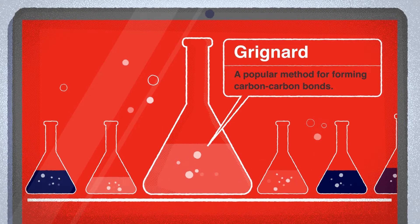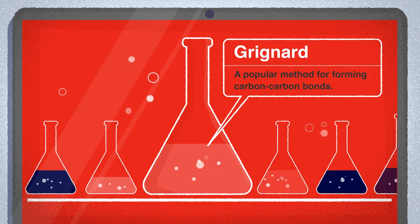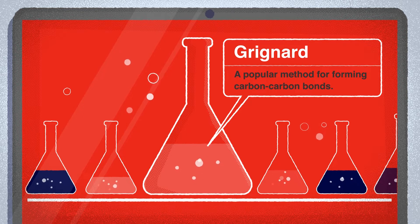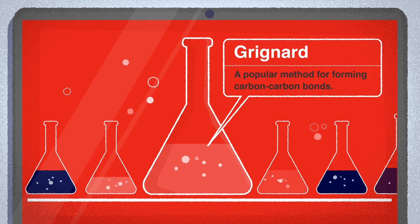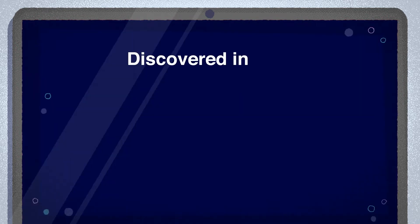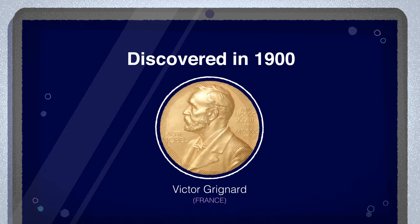This reaction is one of the most popular methods for forming carbon-carbon bonds. It involves the use of a carbonyl and an organometallic species called a Grignard reagent, and it is technically a nucleophilic addition to a carbonyl. The reaction was discovered in 1900 by French chemist Victor Grignard, who won the Nobel Prize for his work in 1912.